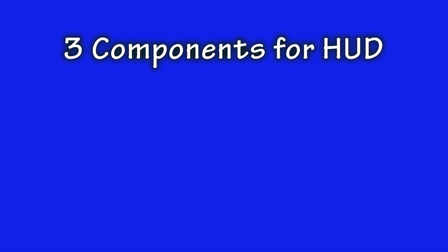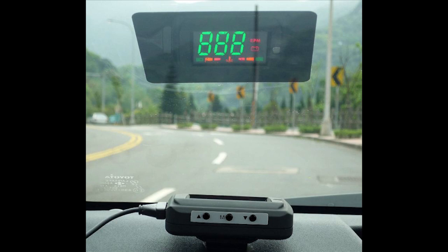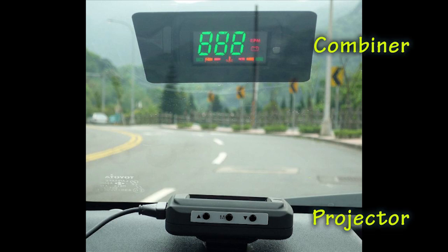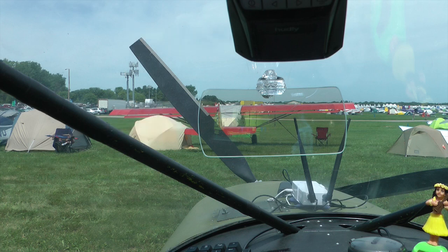Now you can install a heads-up display in your experimental aircraft. Let's see how that can be done. A typical heads-up display contains three primary components: a projector unit, a combiner, and a computer for generating the video image. The projector and combiner work together to form the image that will appear on your windshield. As these two devices improve and get more sophisticated, the projected image will become sharper and easier to see.